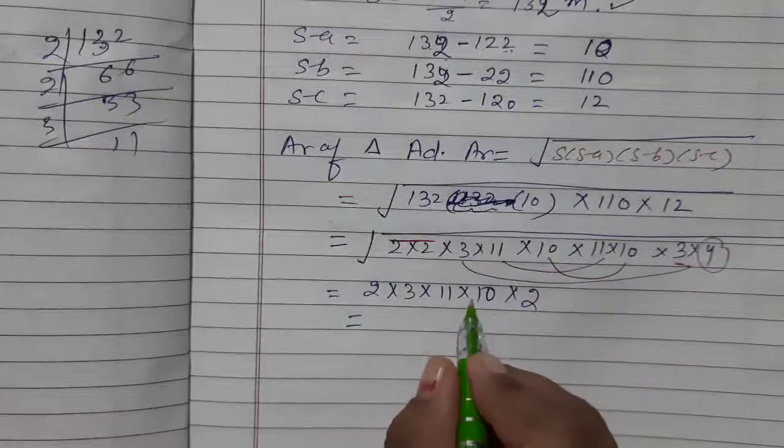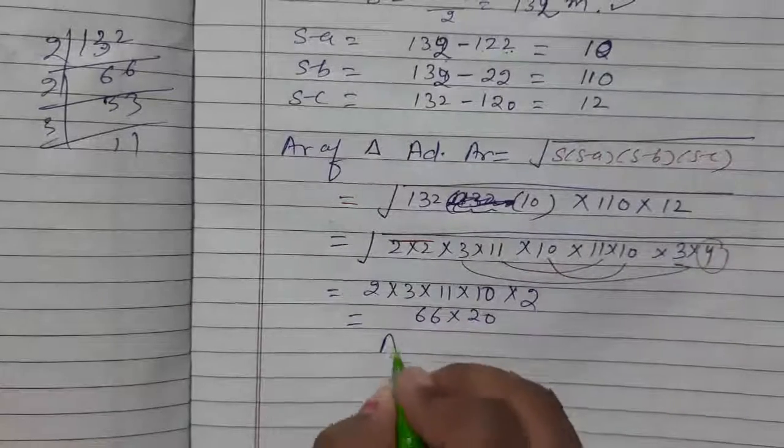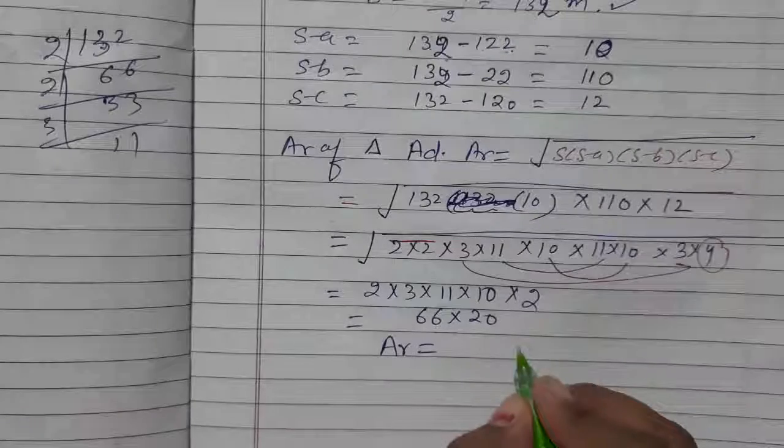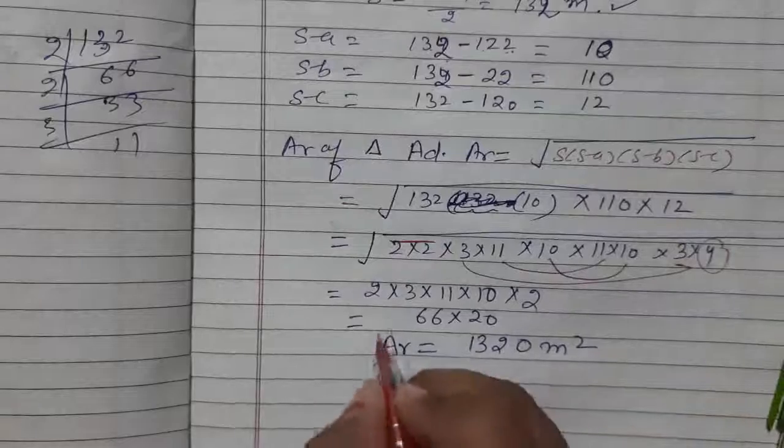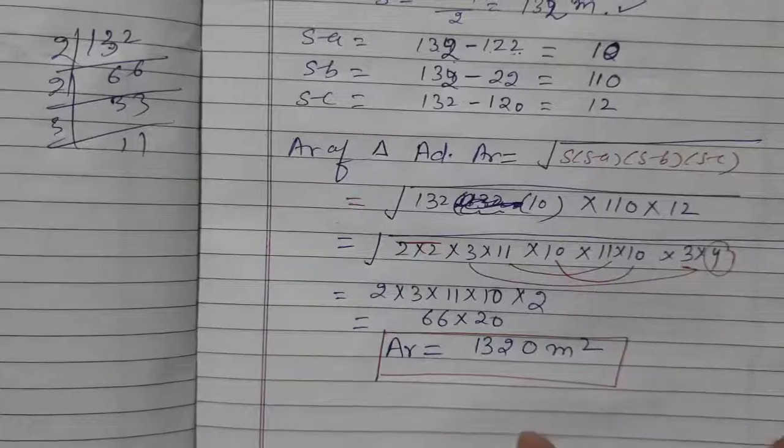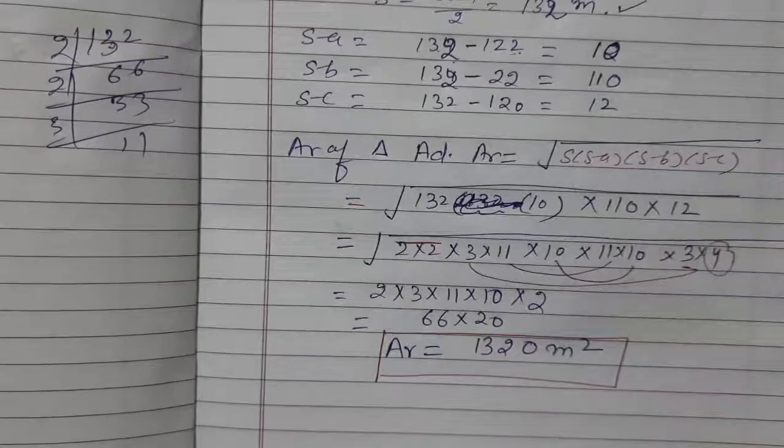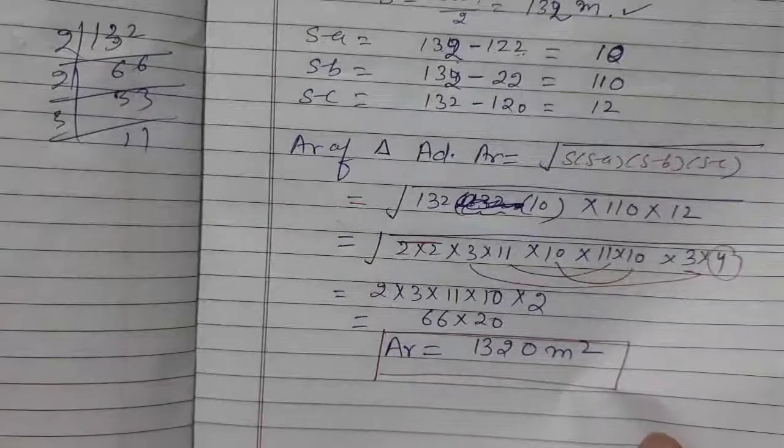So area will be equal to 1320 meter square. So the area of this rectangular advertisement section is 1320 meter square. So now we have to find out the costing.